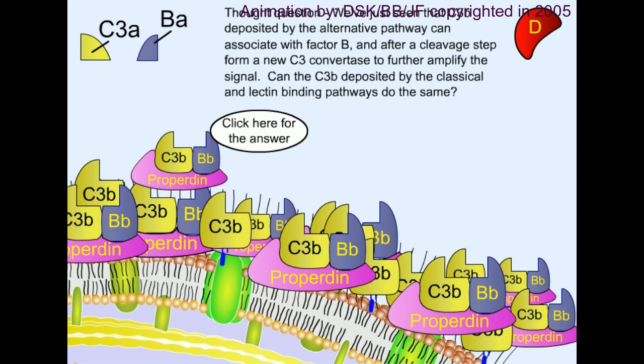Once this C3b-Bb complex is formed, it has one function of opsonization that will help phagocytosis to kill this target pathogen. On the other hand, it will also bring C5 to break C5 down into C5a and C5b, and the rest of the process will follow the classical pathway mechanism.